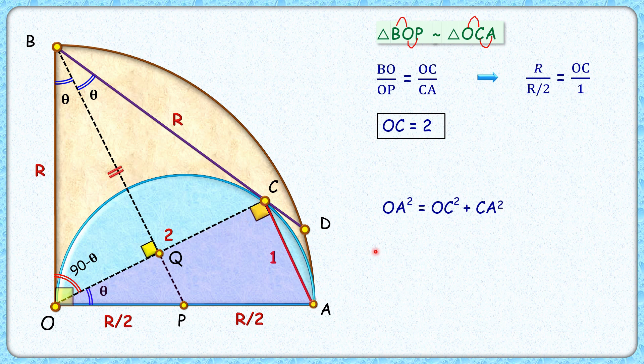Putting the values here, OA is nothing but radius R. So R square is 2 square plus 1 square, or R is root 5 centimeters. And that's our answer.